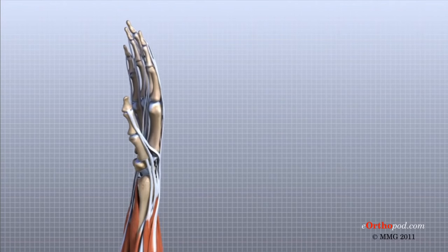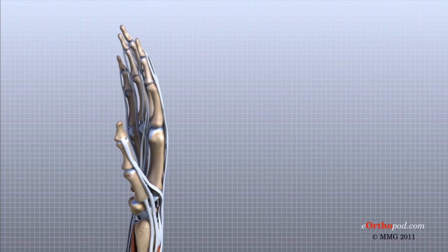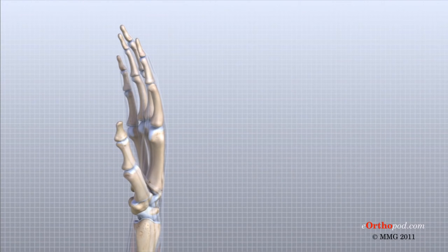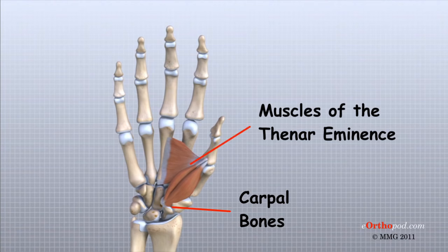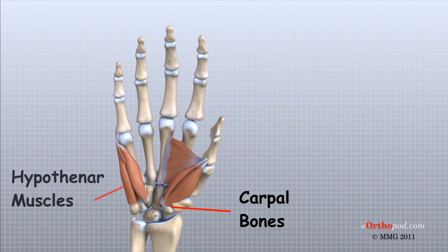Many of the muscles that control the hand start at the elbow or forearm. They run down the forearm and cross the wrist and hand. Some control only the bending or straightening of the wrist, while others influence motion of the fingers or thumb. Many of these muscles help position and hold the wrist and hand while the thumb and fingers grip or perform fine motor actions. Most of the small muscles that work the thumb and little finger start on the carpal bones. The bulge of muscle at the base of the thumb in the palm is called the thenar eminence, and the bulge of muscle at the base of the little finger is called the hypothenar eminence.